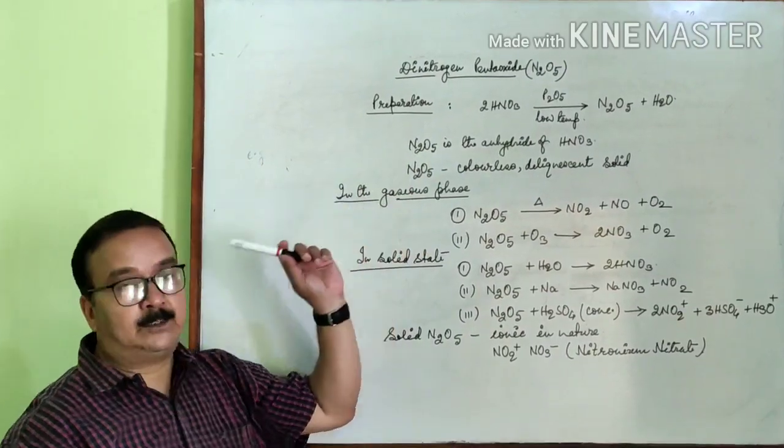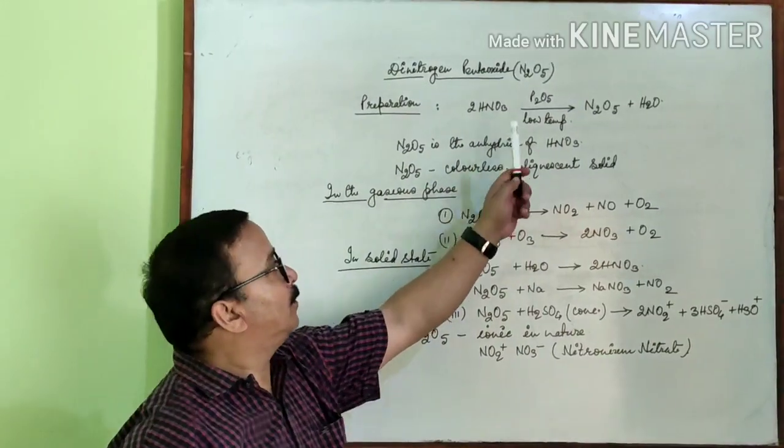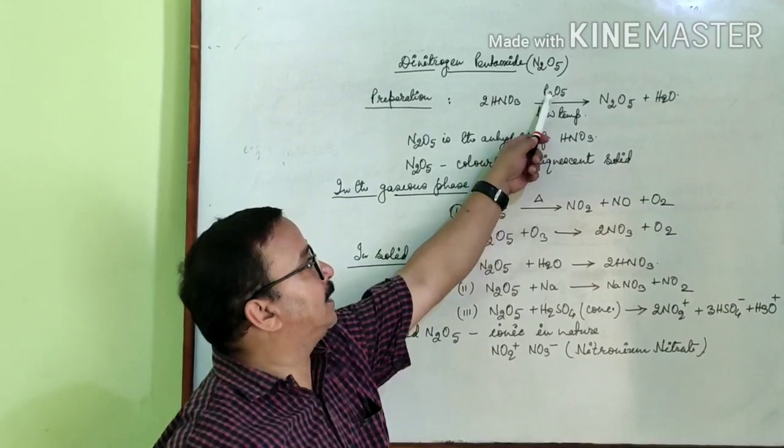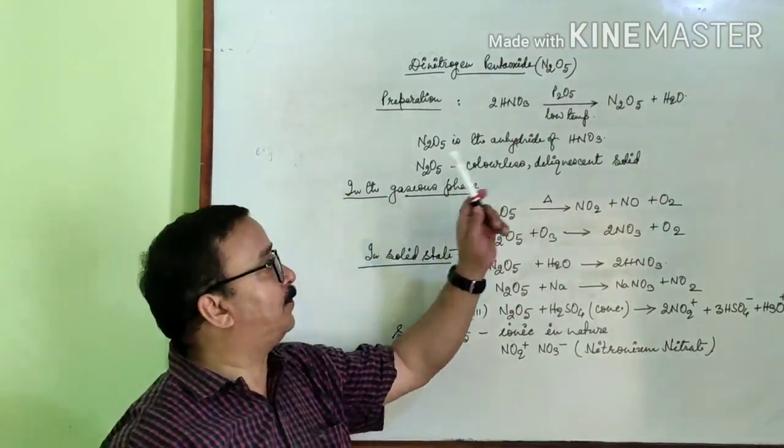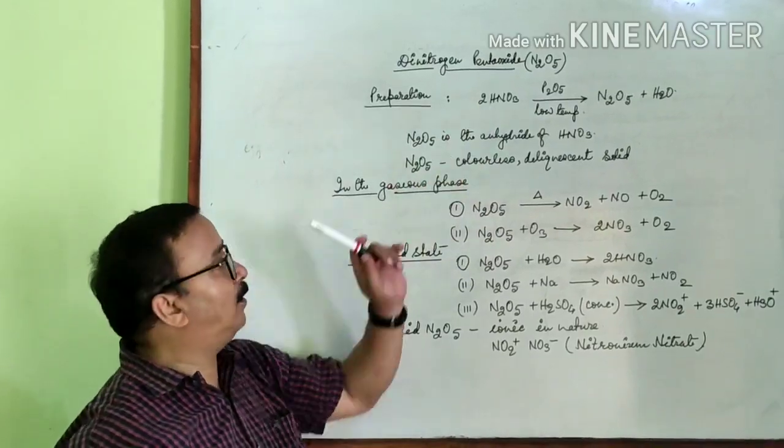Now we can say that N2O5 is the anhydride of HNO3. Because from HNO3 water has been removed when it is heated in presence of P2O5. Therefore N2O5 is the anhydride of HNO3.